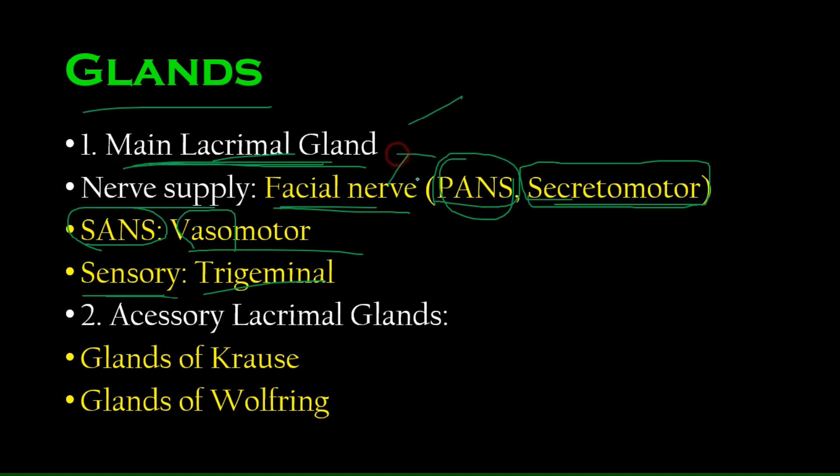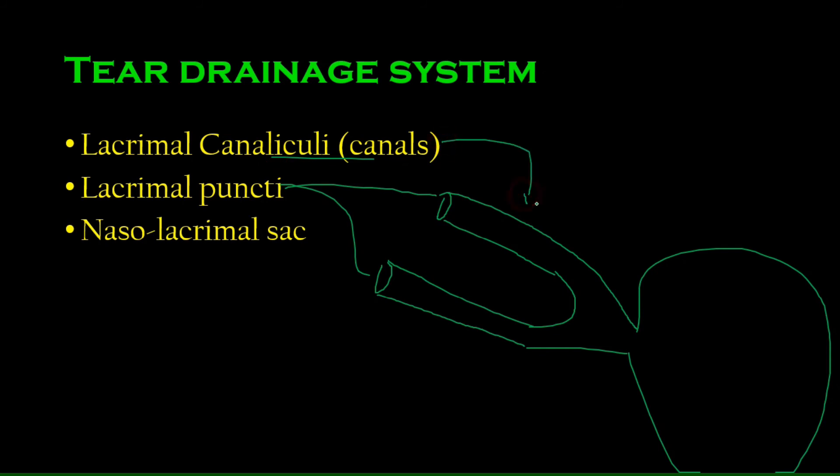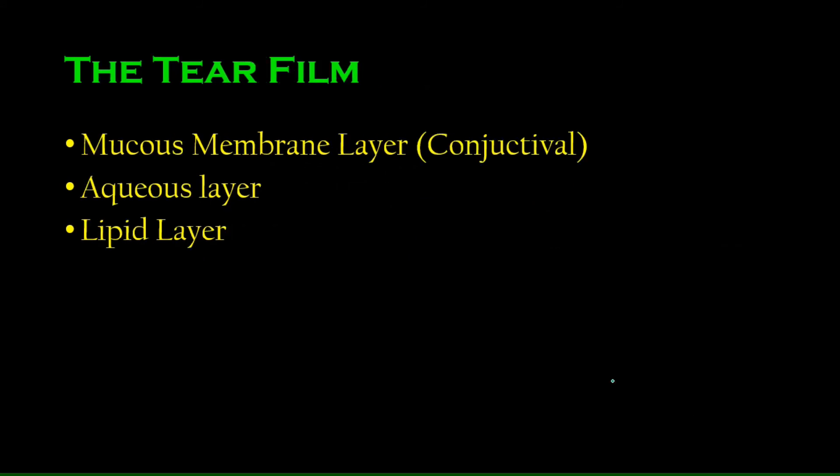We have the main lacrimal gland with two parts, and we have accessory lacrimal glands as well: glands of Krause and glands of Wolfring. The tear drainage system as we discussed: we have the lacrimal canaliculi, the lacrimal puncti—these holes that receive these tears into the canals. The lacrimal canaliculi connect together and deposit into the lacrimal sac. Easy, nothing so difficult about that.